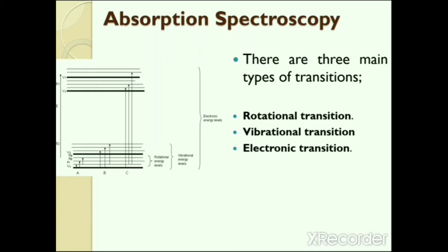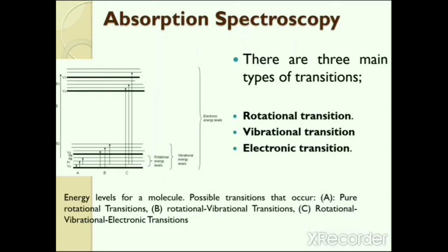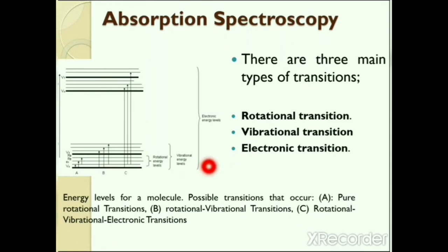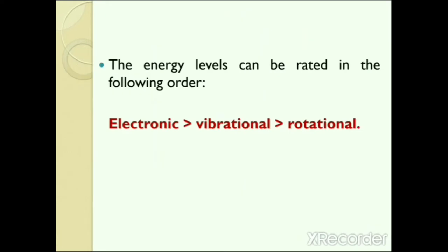The first route occurs when absorption of radiation leads to a higher rotational energy level in rotational transition. The second route is a vibrational transition which occurs on absorption of quantized energy, leading to an increased vibrational energy level. The third route involves electrons of molecules being raised to a higher electron energy, which is the electronic transition. This diagram shows three types of transitions in different energy levels.